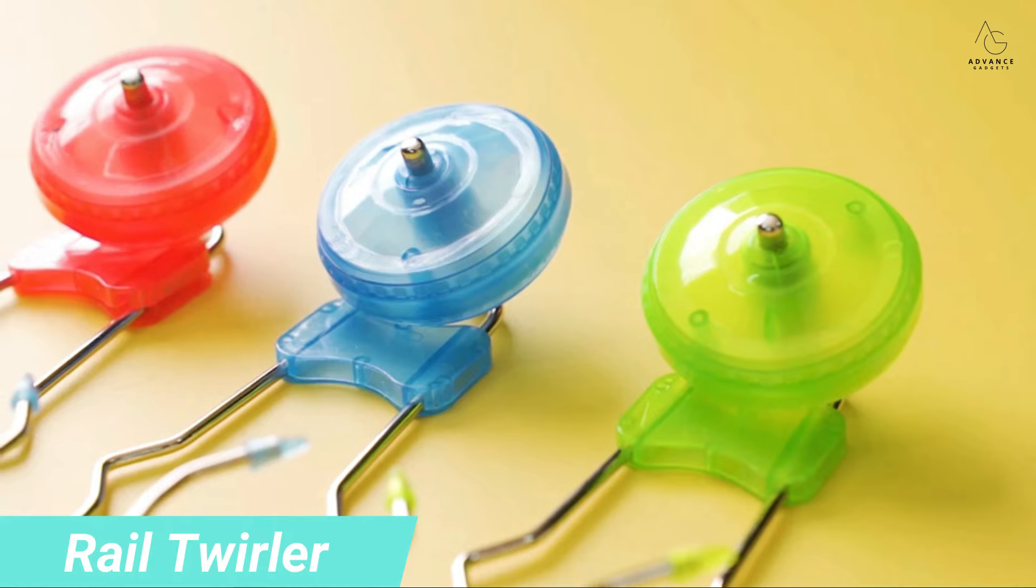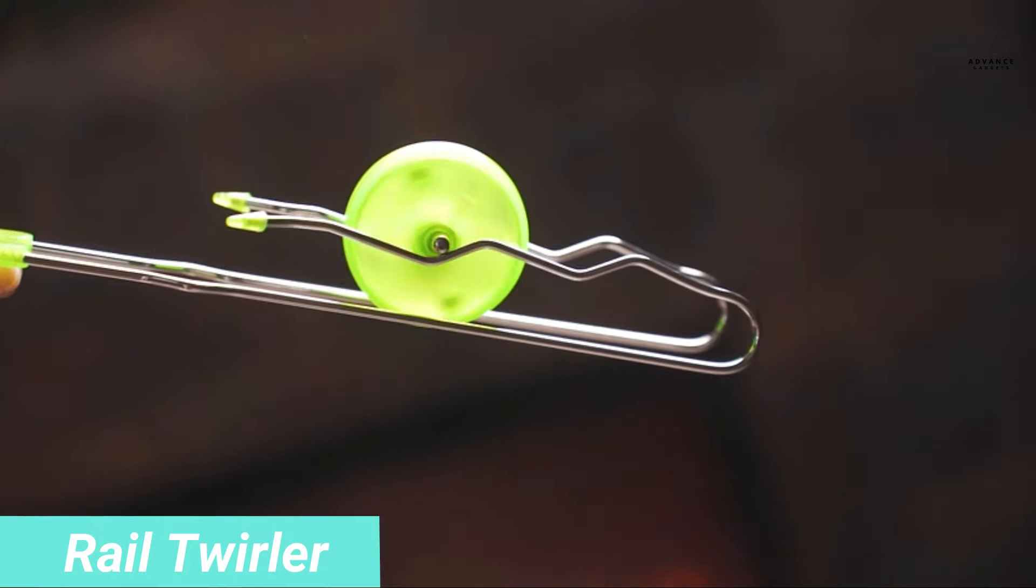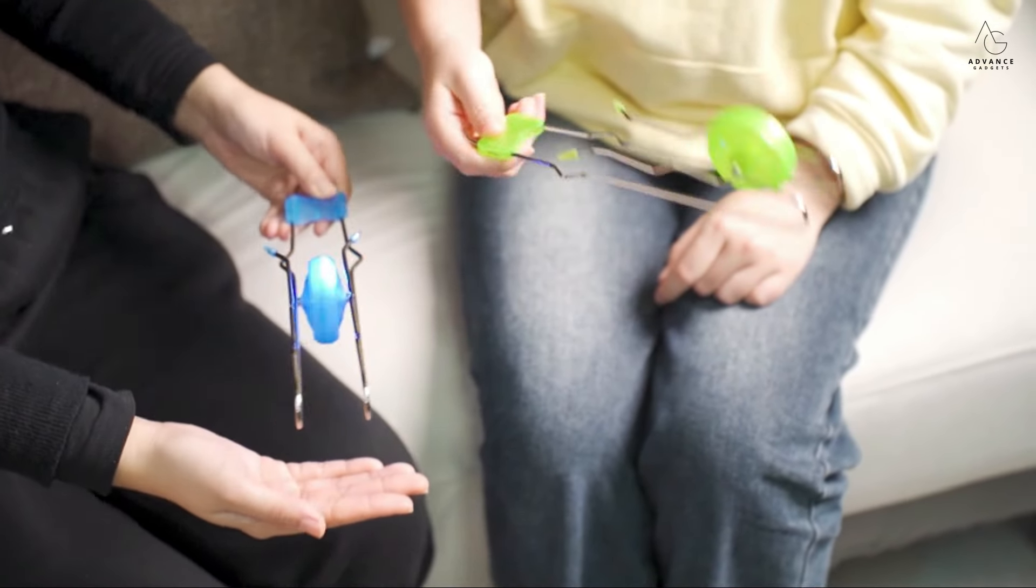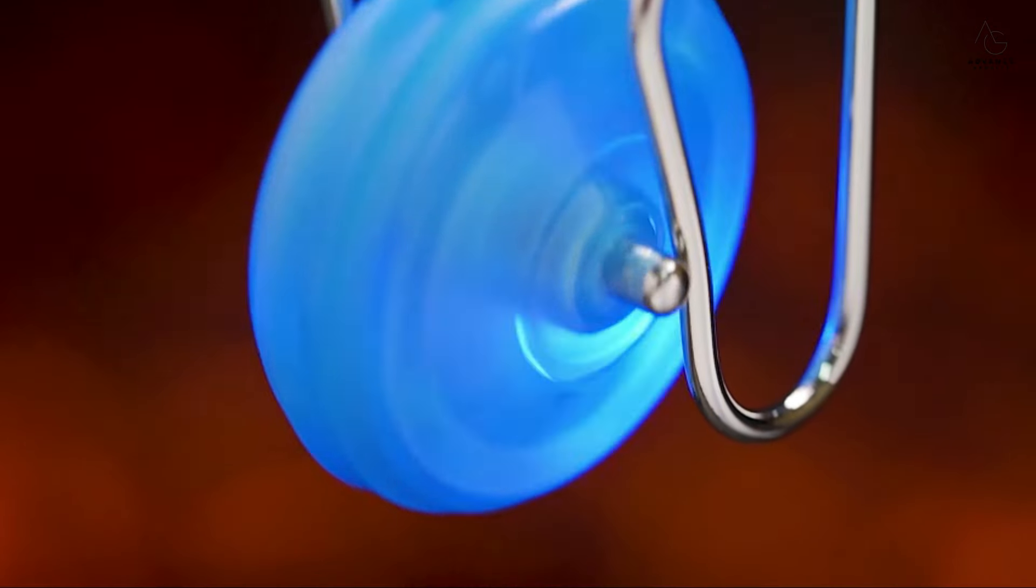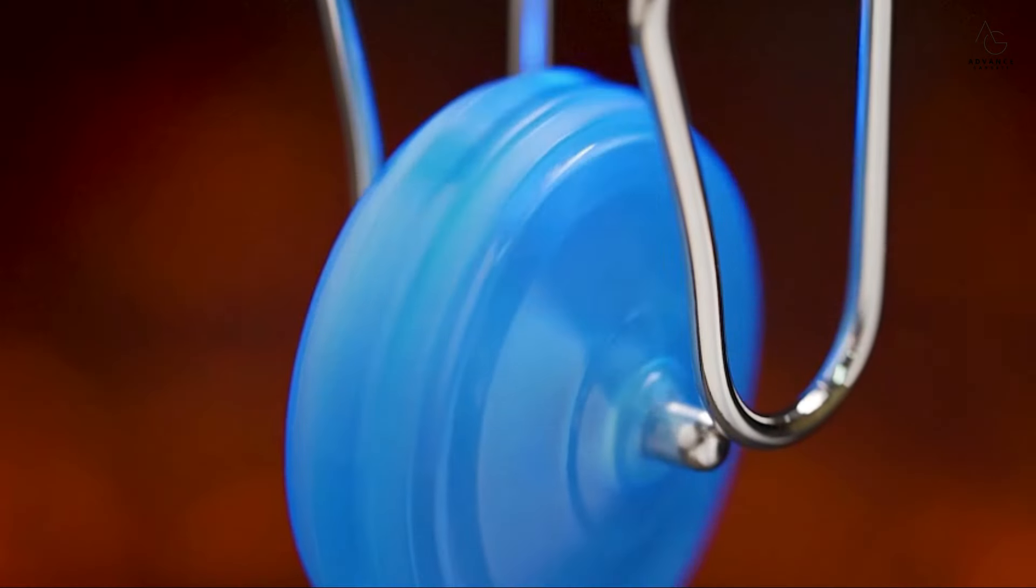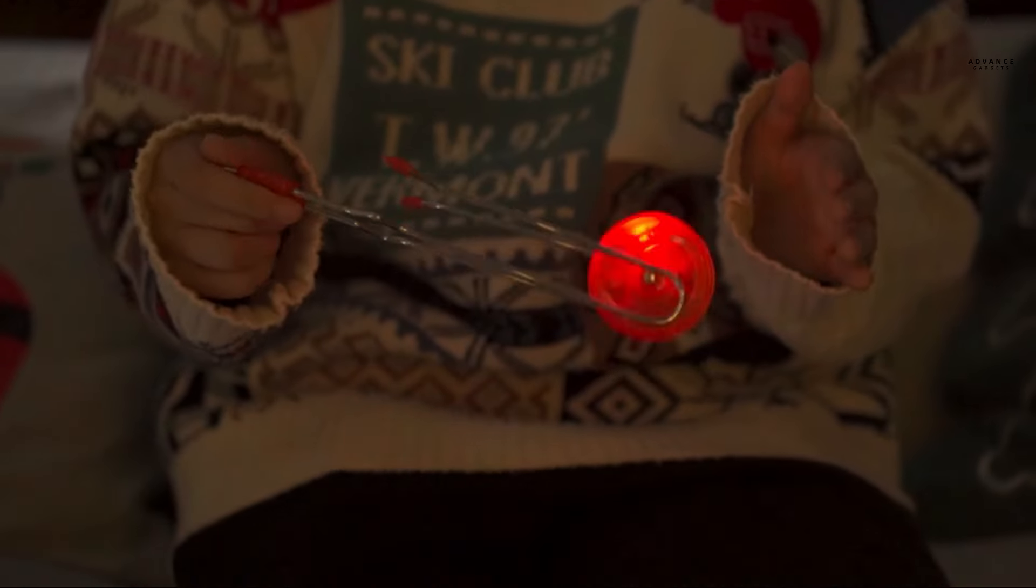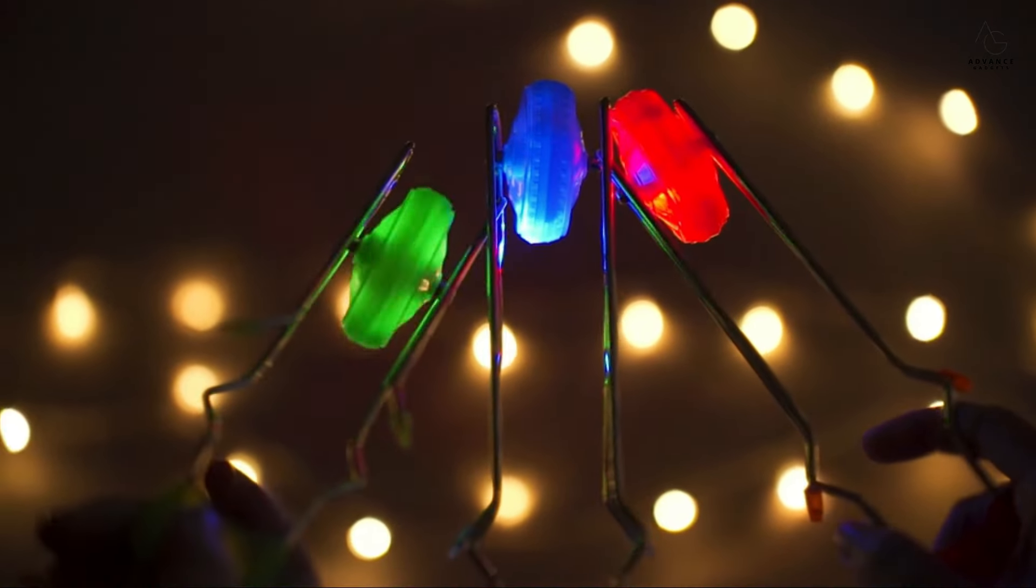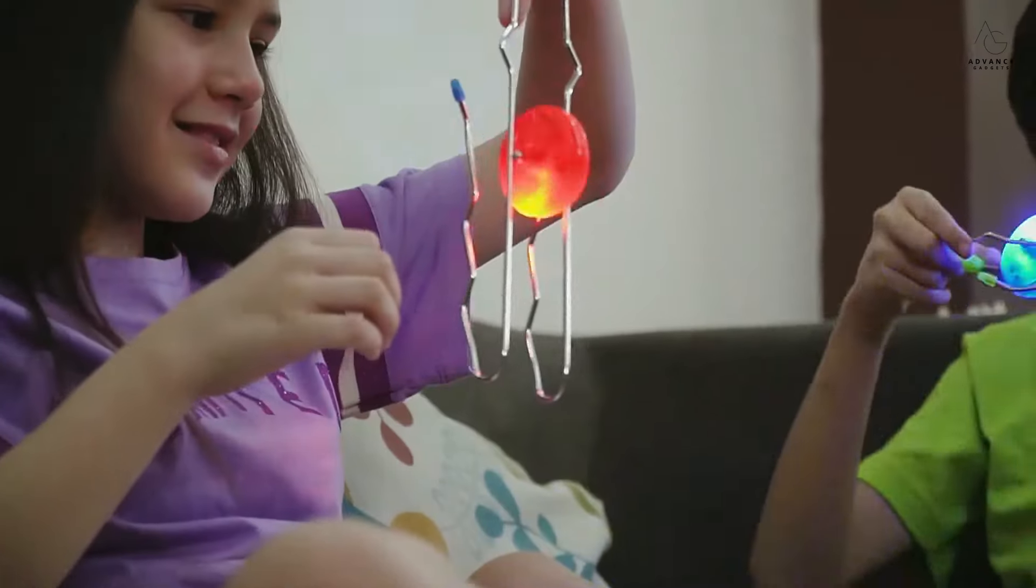This retro toy is designed to withstand the test of time and will captivate your little ones with its gravity-defying stunts. With just a flick of the wrist, the magnetic wheel magically runs around the wire rails without ever falling off, providing endless entertainment. This whirly wheel isn't just for kids. It's a great magnetic fidget toy for anyone.